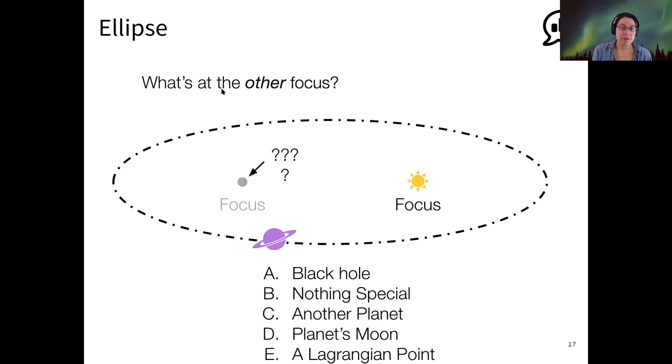In the case of a star and a planet, there's a star at one focus. What's at the other focus? I see the most answers for B, that there's nothing special at that other focus. It's not a Lagrangian point—we're not going to get into those, but if you're curious, you can ask me after class. There's nothing really special about this other focus. It's another mathematically interesting point of the ellipse. But for understanding the orbits, all you need to know is that there's a massive object at the focus, a second massive object orbiting around the first one, and the average distance is called the semi-major axis.